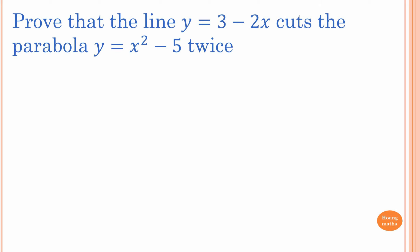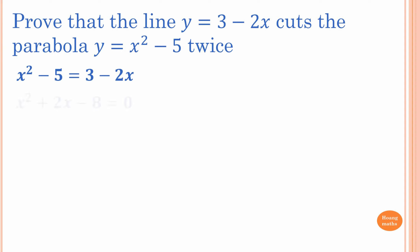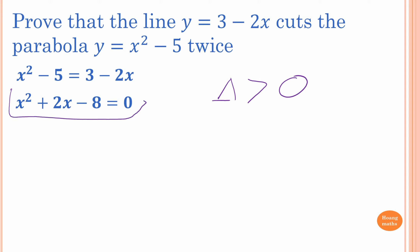Prove that the line y = 3 minus 2x cuts the parabola y = x² minus 5 twice. We don't need to find the coordinates — we just need to show the discriminant is greater than 0. Making the equations equal and rearranging gives a quadratic equation. If discriminant > 0, it has two real roots, meaning the line cuts the parabola twice.